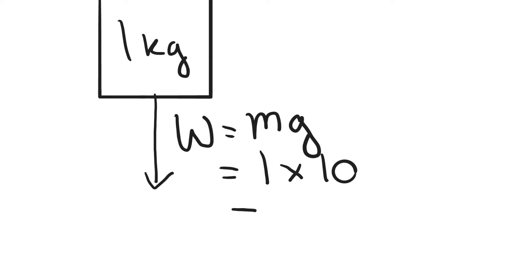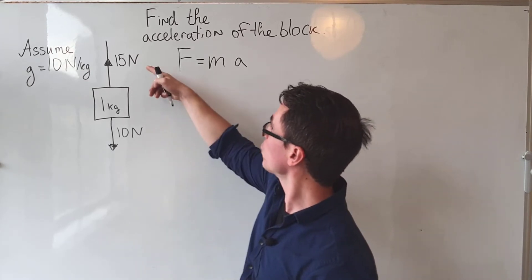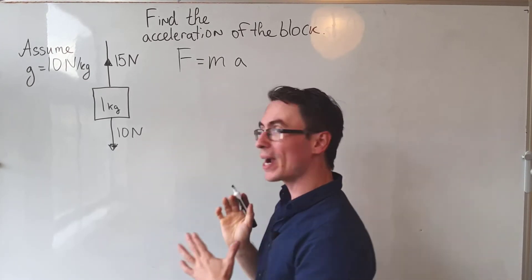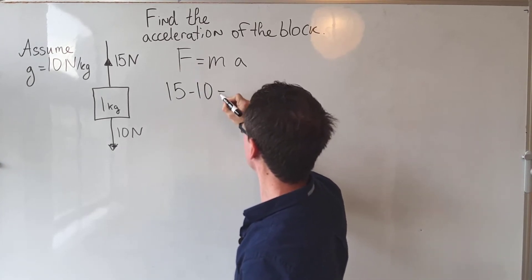This will just be equal to 10 newtons, and the overall force will be 15 take away 10 because they're moving in different directions. So it's going to be 15 take away 10 is equal to mass times acceleration.